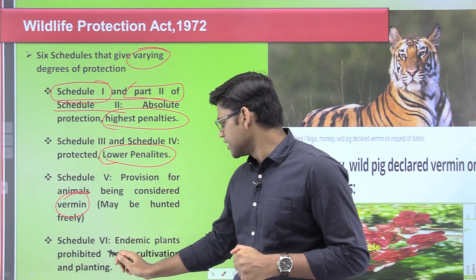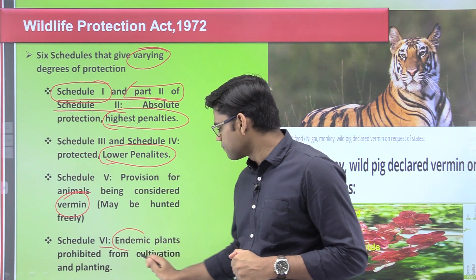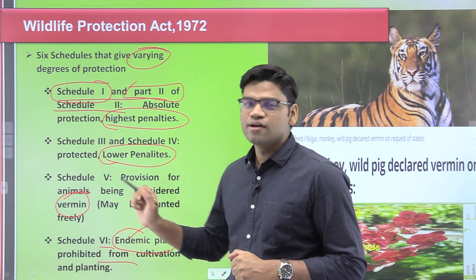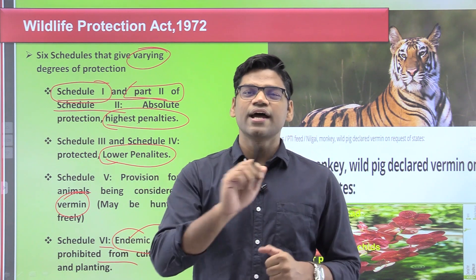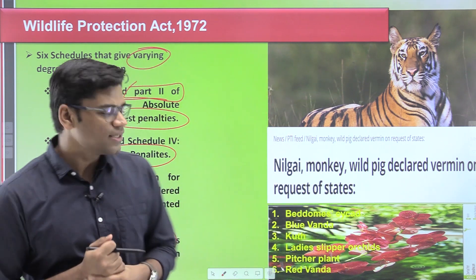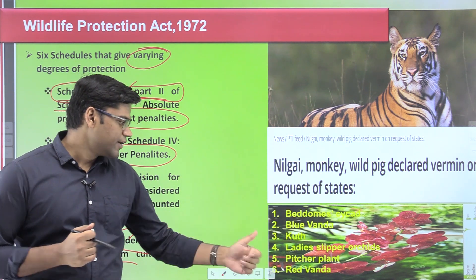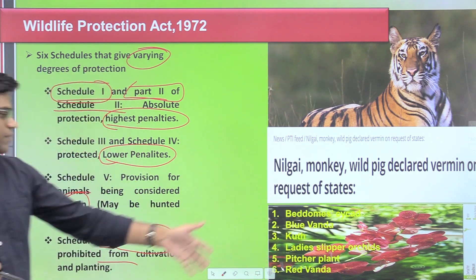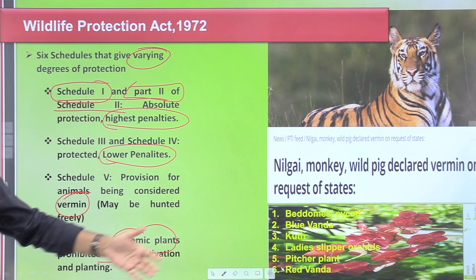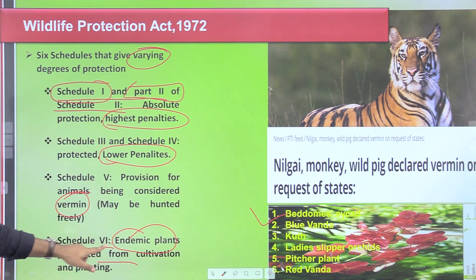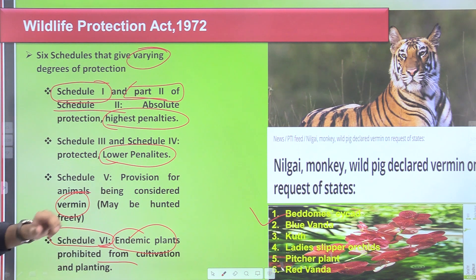Schedule 6 deals with endemic plants that are prohibited from cultivation and being planted. Plants like Blue Vanda, Karch, and Red Vanda — these different plants have been protected under Schedule 6 and have been prohibited from being cultivated and planted.